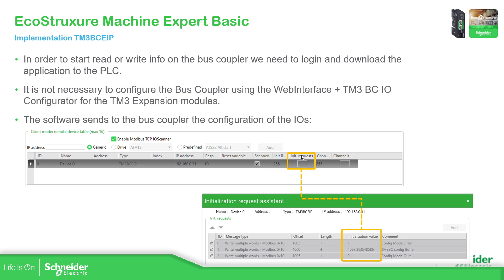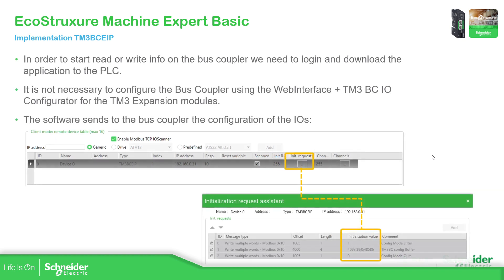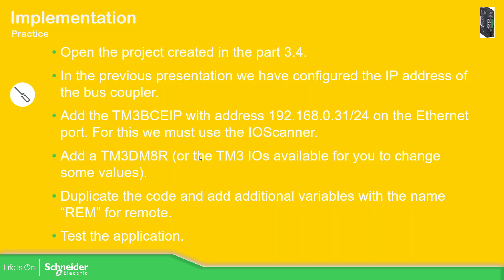If you go to the initial request, you can see some parameters here. This section is important because it contains the configuration of the bus coupler. If you send this information initially, you will configure the address and the device — essentially configuring the bus coupler to recognize all the devices you've added. So let's try to do something similar to this.